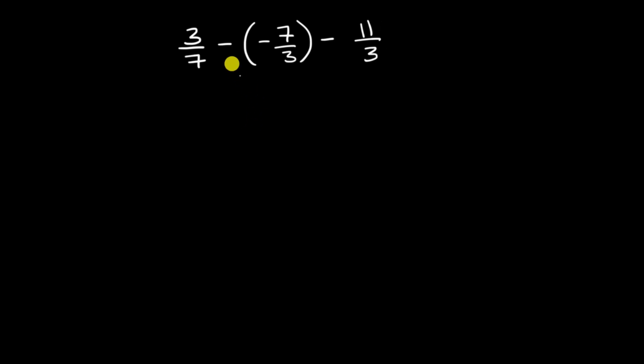But what we could do is rewrite this. Instead of saying minus something minus something else, we could rewrite it in terms of addition. What do I mean by that? Well, if I have 3/7, I'll start with that. Subtracting something is the same thing as adding that something's opposite. So subtracting negative 7/3 is the same thing as adding the opposite of negative 7/3, which is just positive 7/3. And subtracting 11/3 is the same thing as adding the opposite of 11/3, which is negative 11/3.